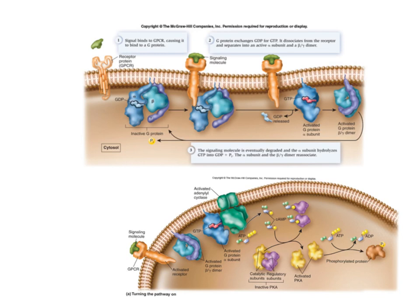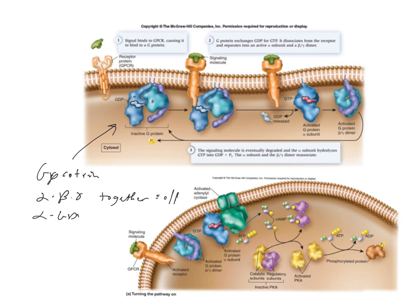By default our G protein complex is off. If the alpha, beta, and gamma subunits are all together, that equals off. This happens when the alpha subunit is GDP-bound — so when alpha has GDP, all three subunits are together and the complex is off.